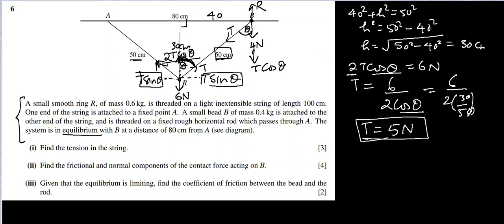Now we can use vertical component and we can find normal contact force. So reaction R is upwards, but 4 Newtons and T cos theta are downwards. R we want to find out: 4 plus T, we know now is 5 Newton, cos theta we know is 30 over 50. That comes out to be 4 plus 3, which is 7 Newtons. That is the normal contact force.